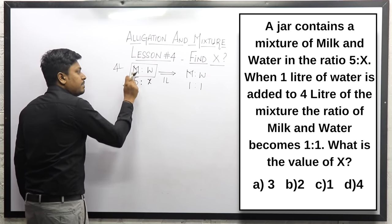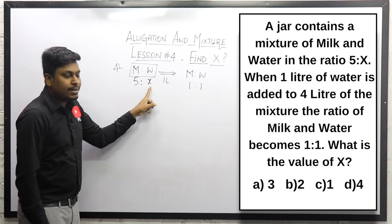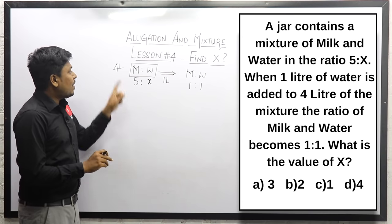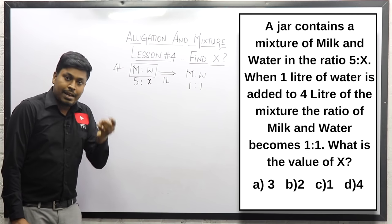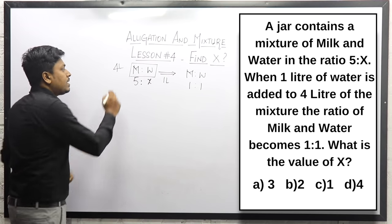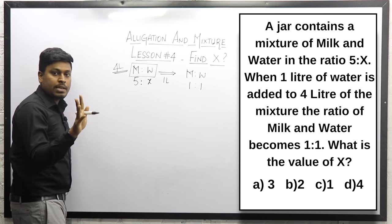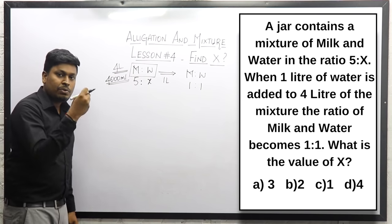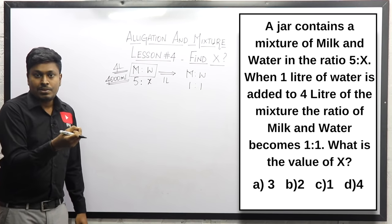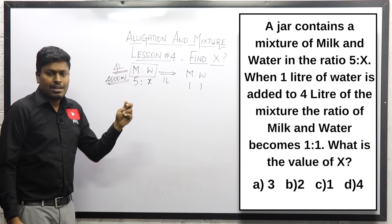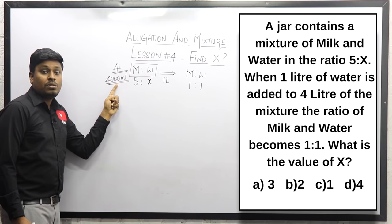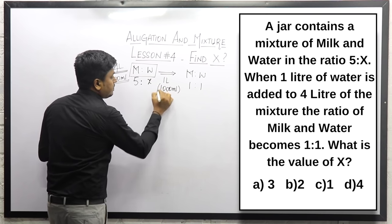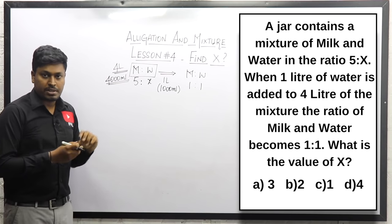In this 4 liter jar, 5 parts is milk and x parts is water. After 1 liter of water is added, the final ratio becomes 1 is to 1. To avoid confusion with liters, I will convert to ml: 4 liters is 4000 ml and 1 liter of water added is 1000 ml. Now let me solve using the shortcut method by substituting the options.